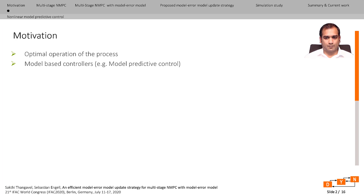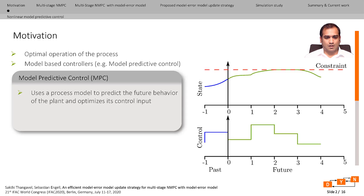We are interested in the optimal operation of a process, and this can be achieved using model-based controllers. Among model-based controllers, the model predictive control is the most prominently used in the process industries because of its ability to handle multiple input multiple output systems with constraints with relative ease. Model predictive control uses a plant model to predict the future behavior of the plant and optimize its control input. The blue line represents the past states and the green line represents the predicted future states, and only the first control input is applied to the plant.